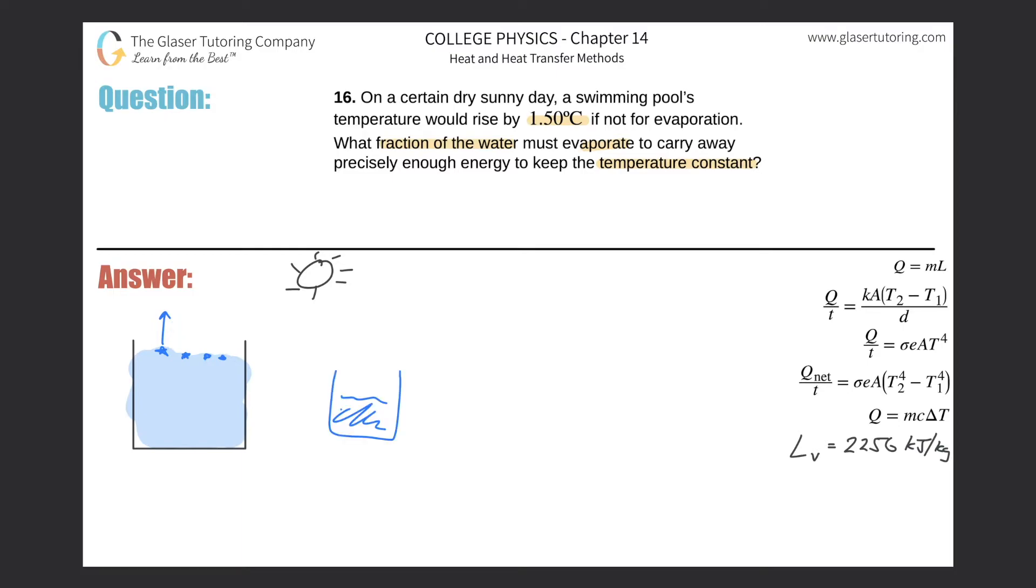So you can think about energy leaving the pool, basically. Hopefully now we might be able to see how we can begin to set this up. Basically, we're trying to figure out how much water evaporates. When water evaporates, we'll call this the heat of vaporization.